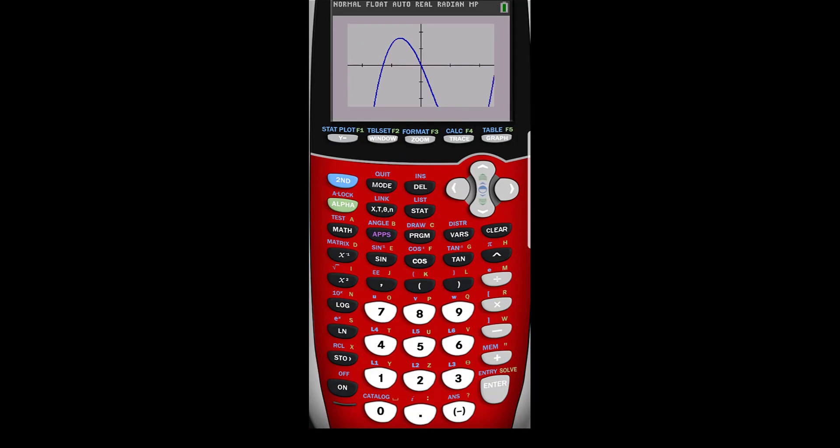So I see that I'm missing one, so I'm going to zoom out a little bit. Okay, so now I have all three roots. So I'm going to go ahead and do my second calc, zeros, and I'm going to start with my most left one.